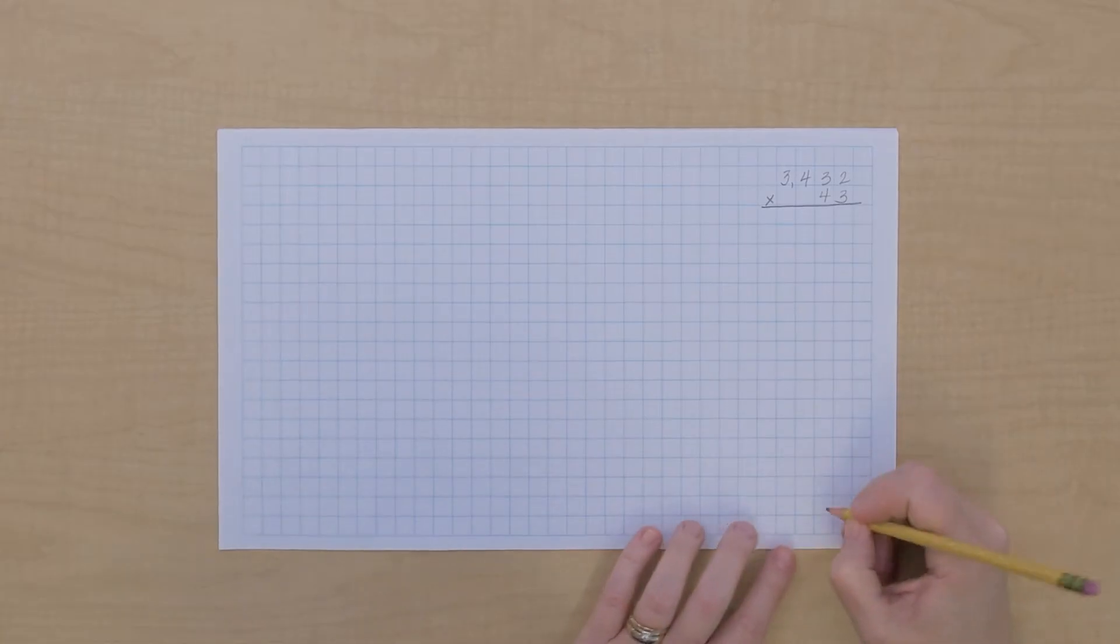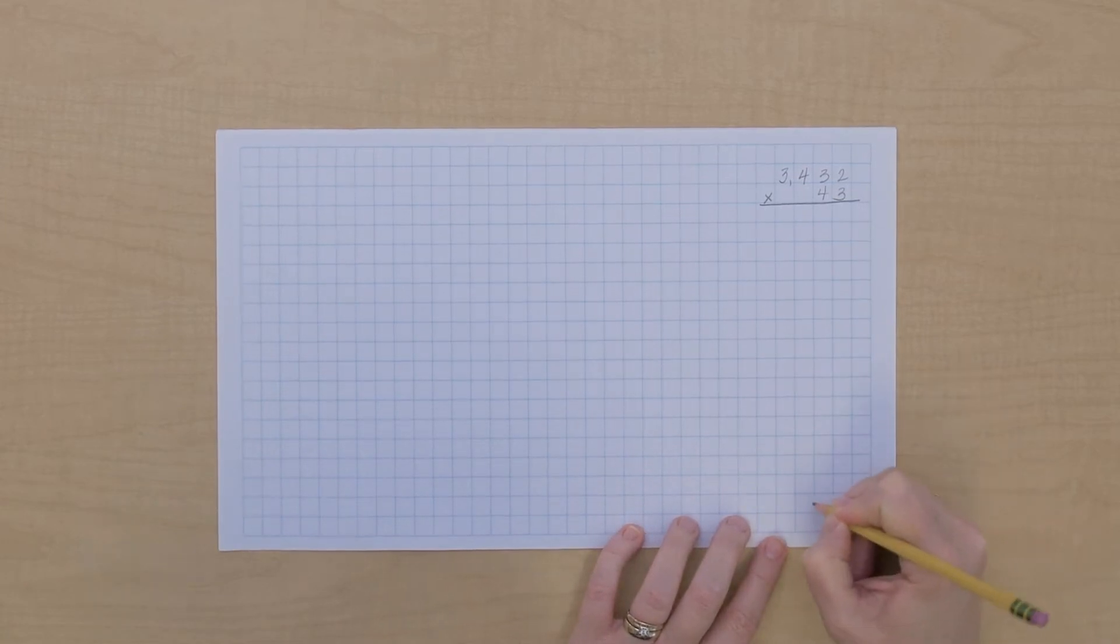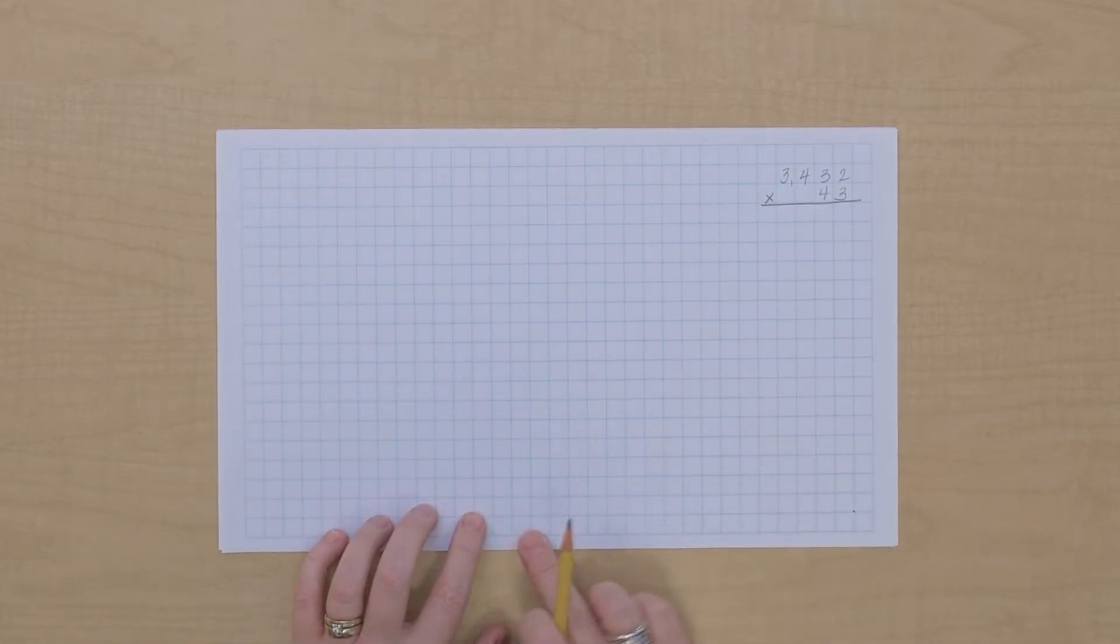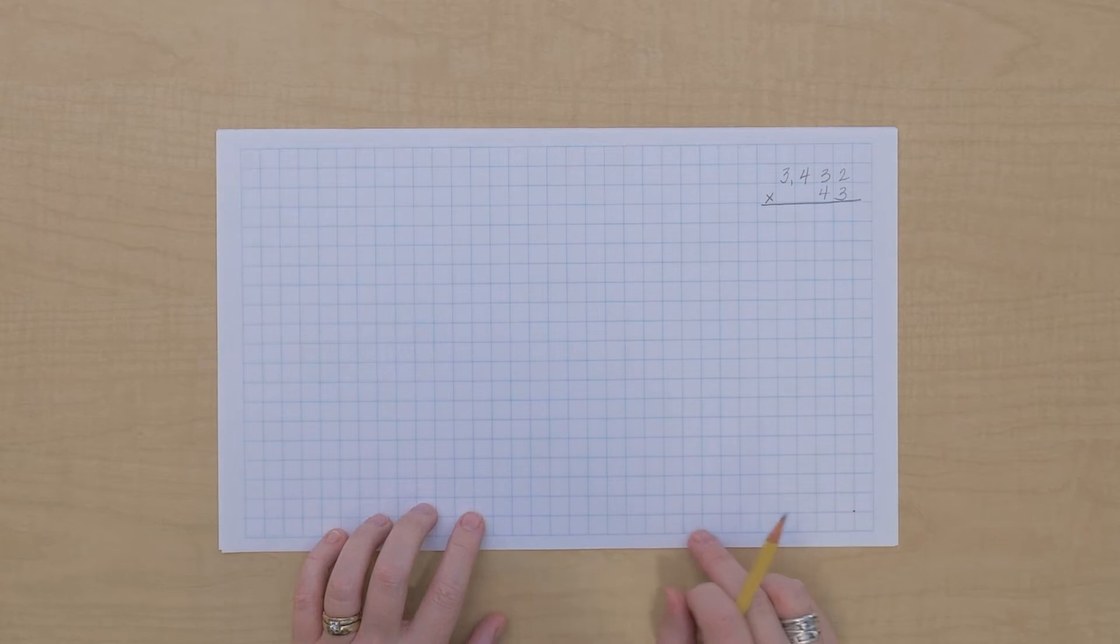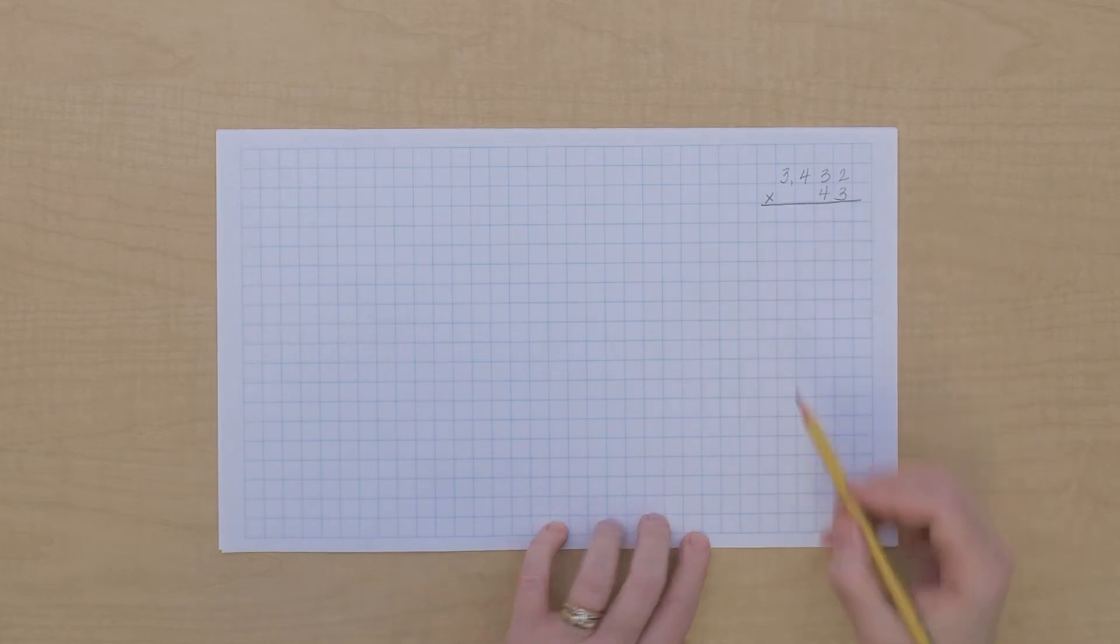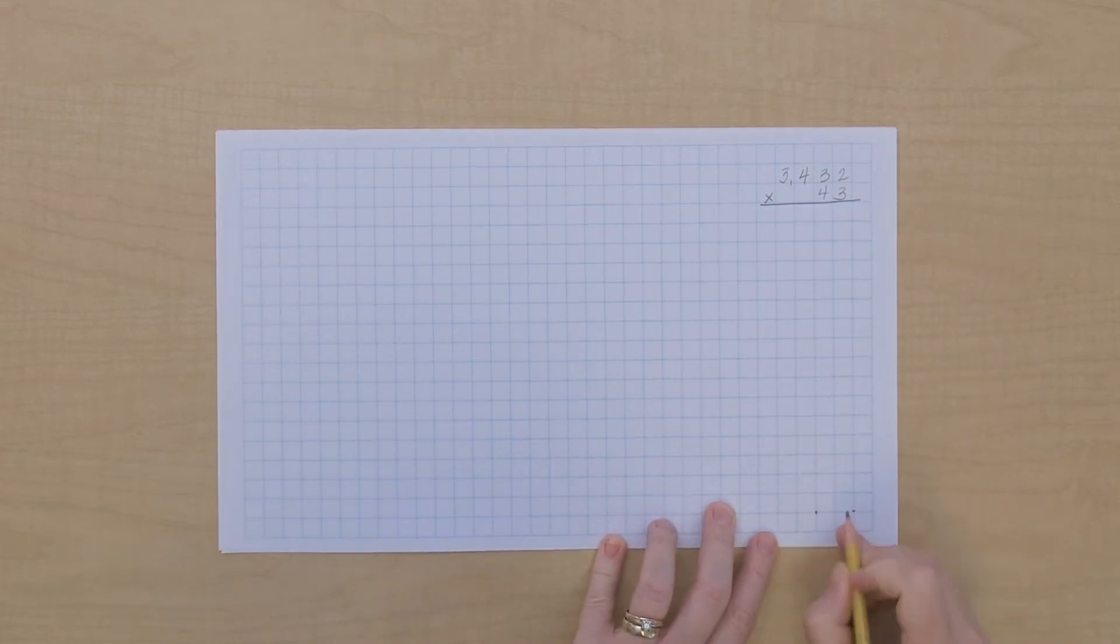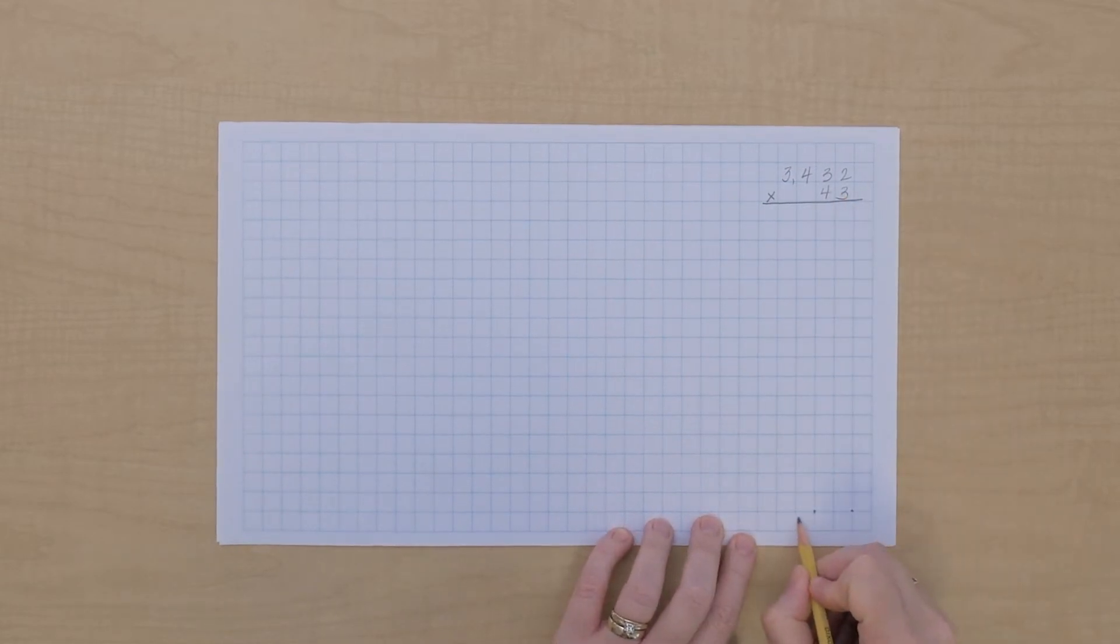I'm going to make a dot on this paper to start our multiplication. I'm going to make a dot right here. And across the bottom here I'm going to count out enough squares to stand for my multiplicand. So we had two units, so I'll count over two and put a dot here. We have three tens, so one, two, three, and put a dot here.